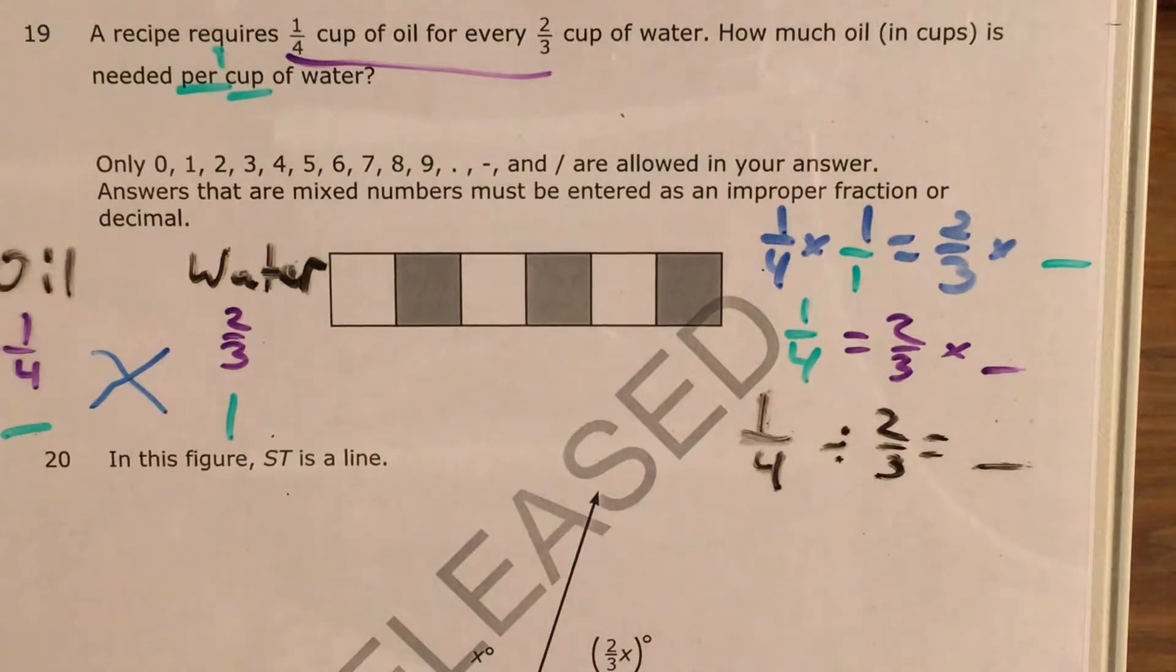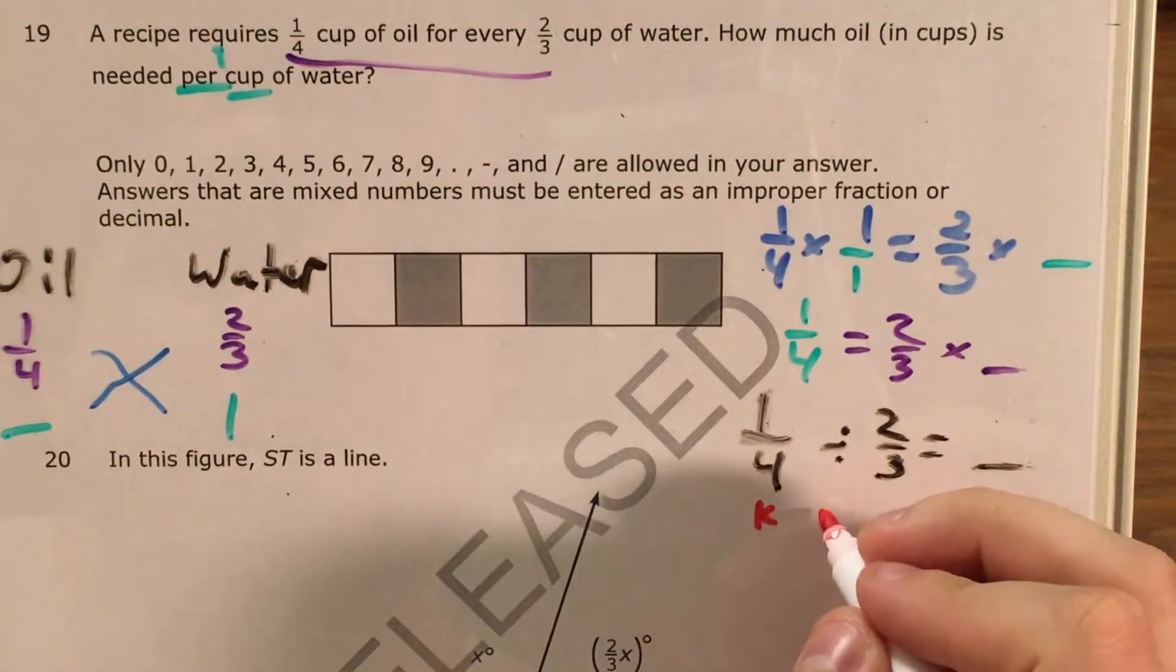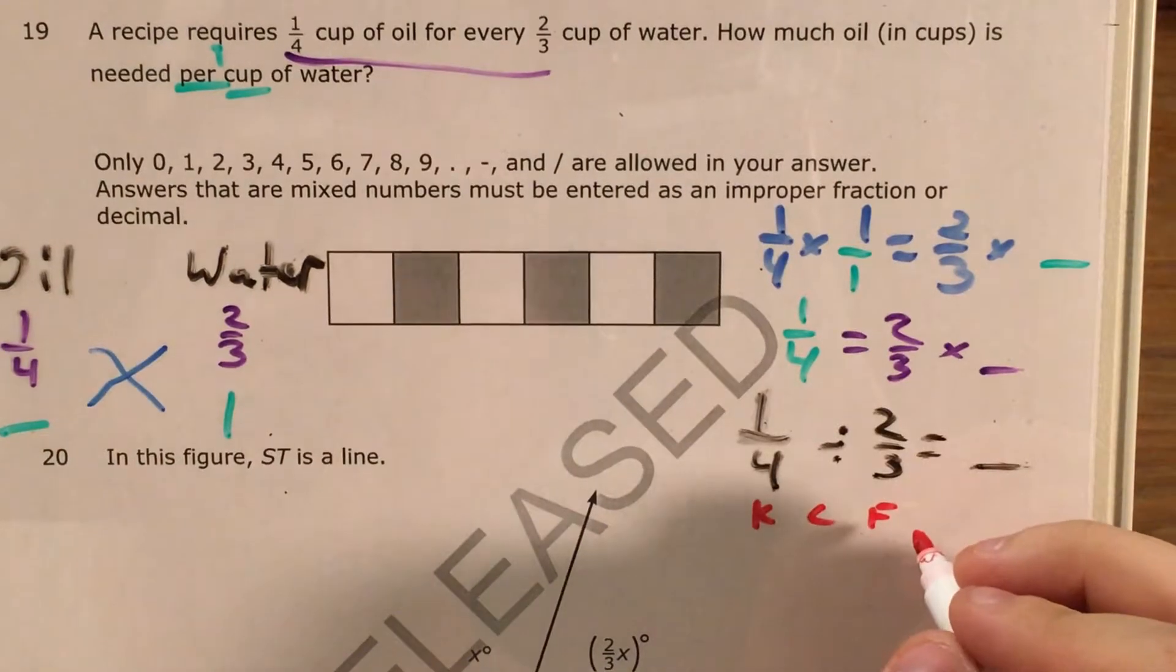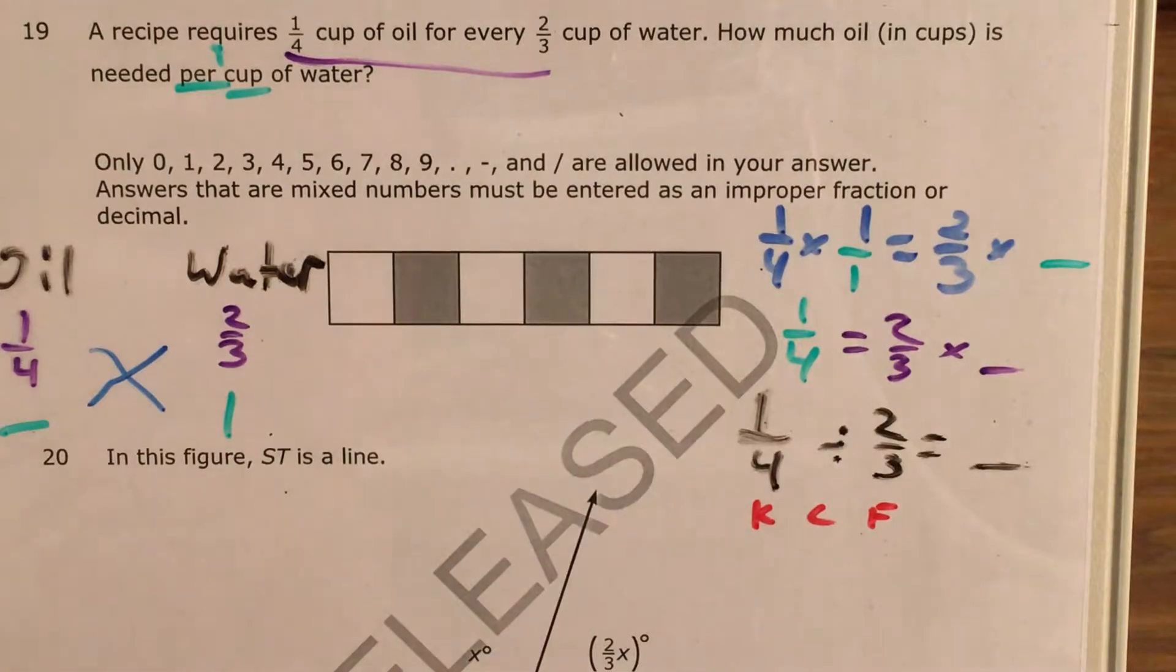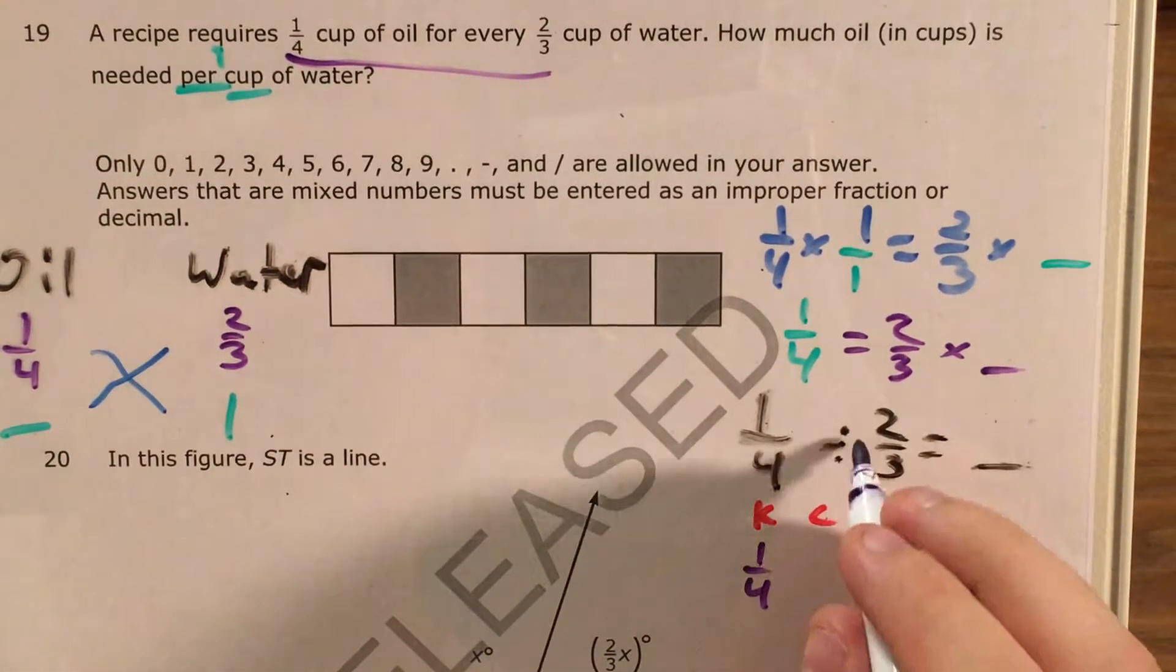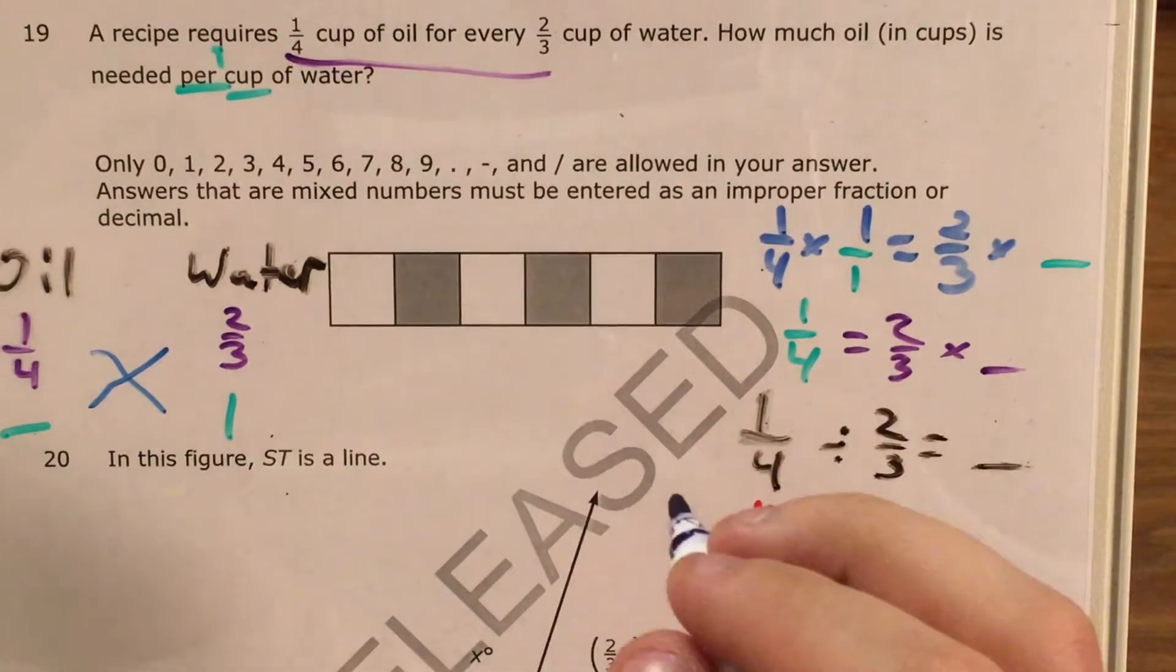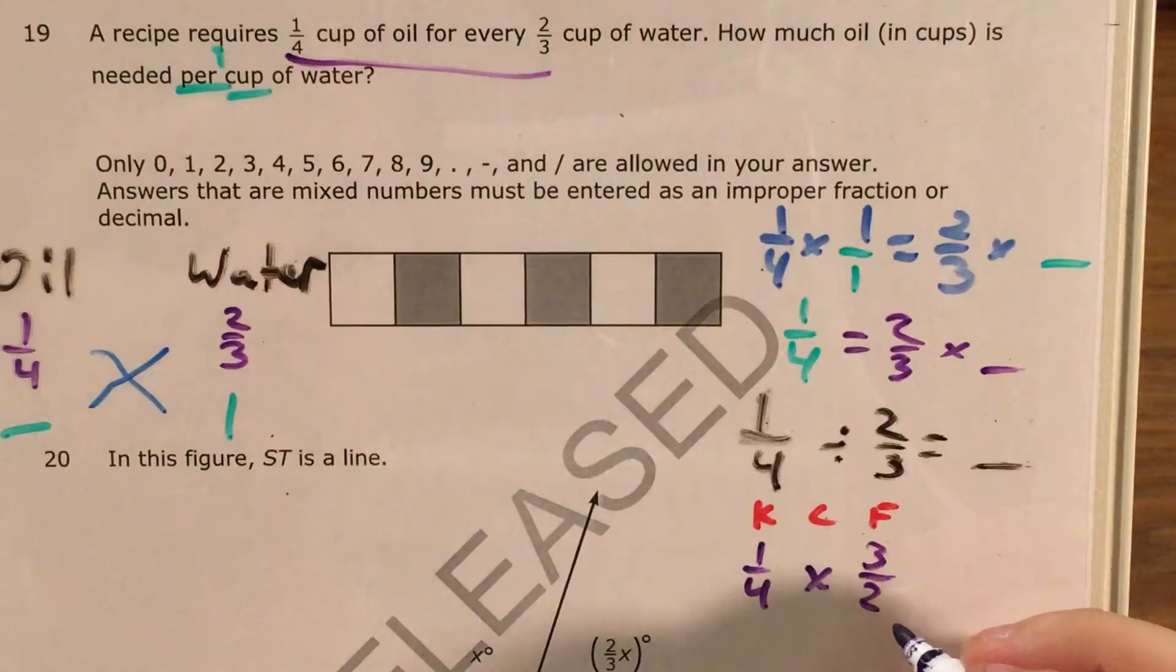And now I have a dividing fractions problem on my hands. I need to break out the memory trick that reminds me of Kentucky Fried Chicken. Keep change flip, where I'm going to keep one-fourth the same. One-fourth stays at one-fourth. I change dividing to multiplying. And then I flip two-thirds so it becomes three-halves.